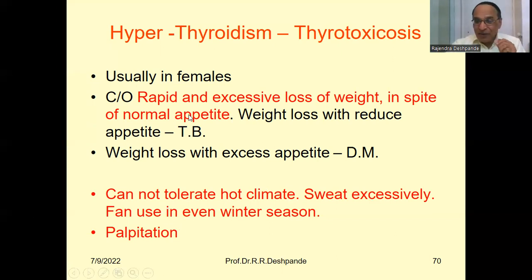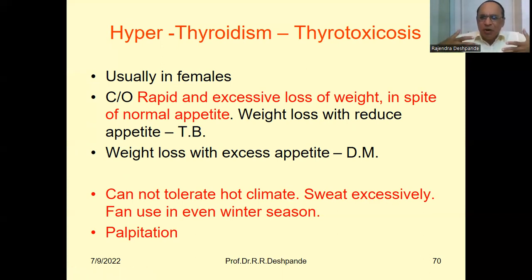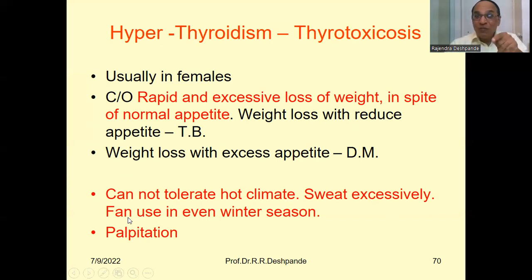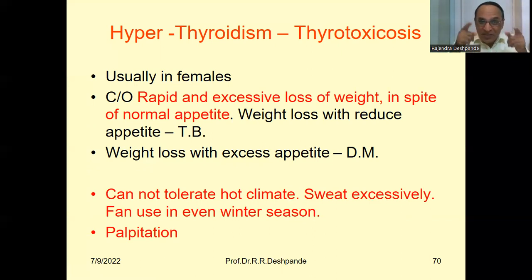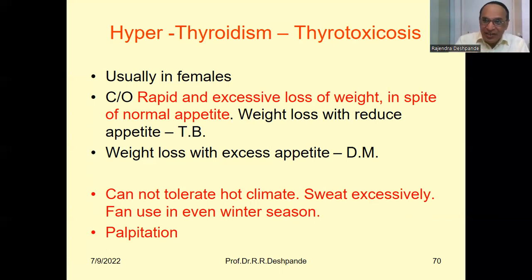Another interesting feature: because basal metabolism is increased, the patient cannot tolerate hot climate. They feel very hot all the time, with excessive sweating and constant fan use. Everybody should note this point — the patient will use the fan even in winter. In November and December in India, people feel cold, but this patient has excessive heat because of hyperthyroidism. Metabolic processes are increased, so this patient will need air conditioning or a fan even in the winter months.